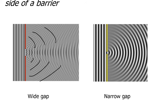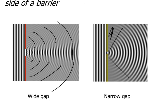Straight wave fronts come in, and on the other side of the barrier they curve and fill the area. With a wide gap, the waves stay straight and flat in the middle but curve on the edges. With a very narrow gap, you basically get semicircle waves the whole way — they're just semicircles as they fill in the gap. There will be less wave action in the shadow cone area directly behind the barrier edges, but definite wave activity does occur through the gap.